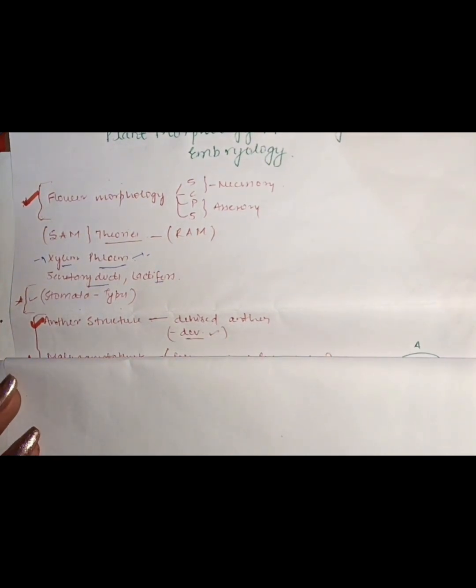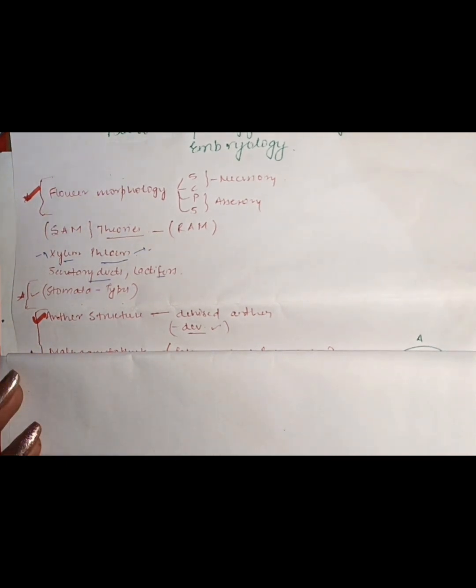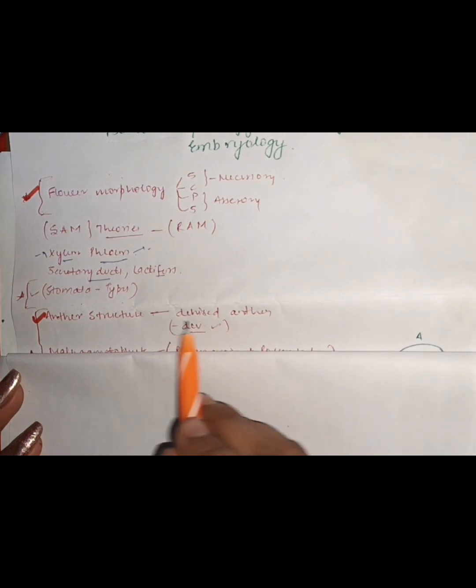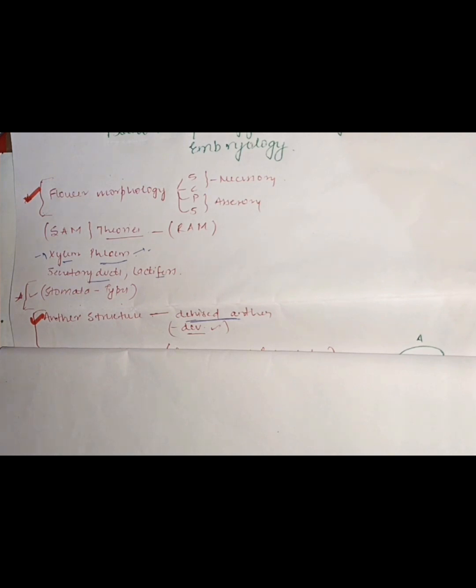The most important topic for practical purposes is anther structure. I have already made a video on this. When you study anther structure, there are two things: the dehisced anther — the split, matured anther. You should know that there are four layers, and the most important layer is the tapetum. There are two types of tapetum, and you have to prepare both types.